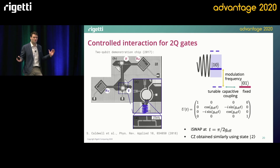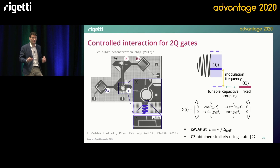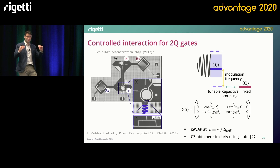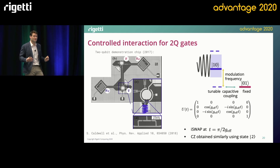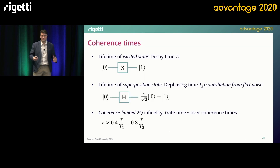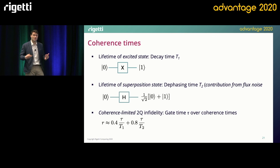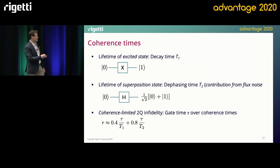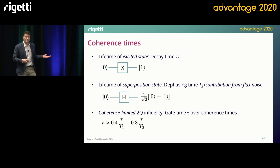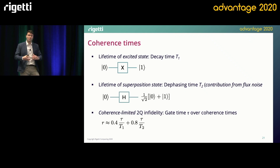Our parametric gates are fully controlled by the RF tones — their length and frequency — which we control with high accuracy. Because gates are activated from a resonance condition, this helps us deal with frequency crowding as we scale up our QPUs. The main limitation on two-qubit gate fidelity is the coherence time of the qubits. T1 is the lifetime of the excited state, and T2 is the dephasing time — the lifetime of a superposition state. Gate error goes like gate time over T1 and gate time over T2, so we continuously improve both gate times and qubit coherence times.